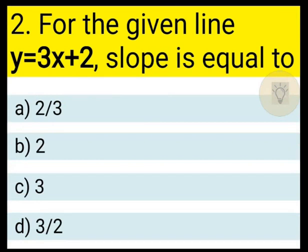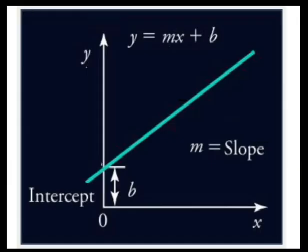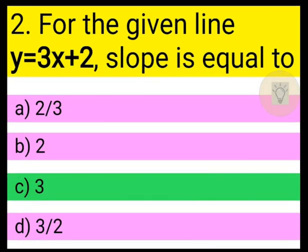Next question: for the given line y = 3x + 2, slope is equal to 2/3, 2, 3, or 3/2? The equation of a straight line is y = mx + b, where m is the slope and b is the intercept. This is the similar equation: y = 3x + 2, where 3 is nothing but the slope. Therefore, c — 3 is the correct answer.